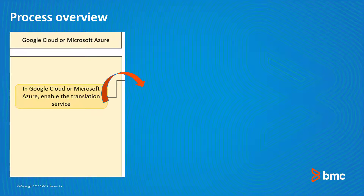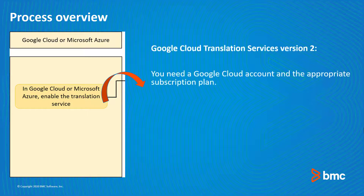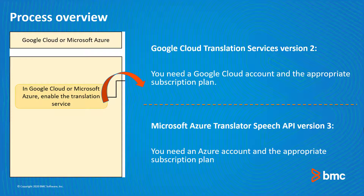BMC Helix platform supports the following real-time translation providers. First, Google Cloud Translation Services version 2 — to use it, you must have a Google Cloud account and the appropriate subscription plan. Second, Microsoft Azure Translator Speech API version 3 — to use it, you must have an Azure account and the appropriate subscription plan.